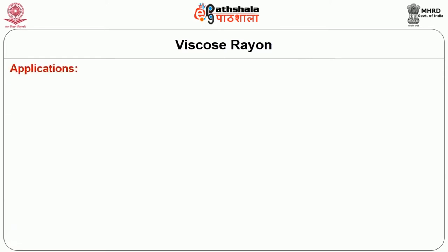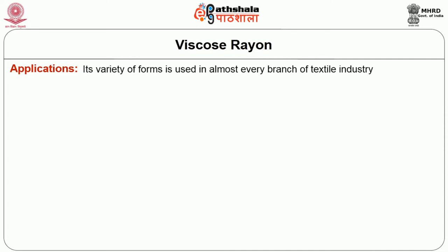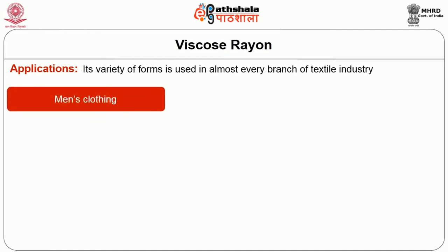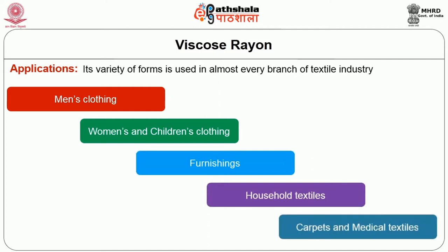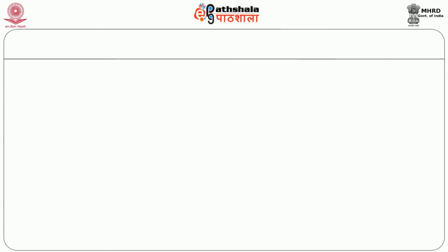It is not affected by most organic solvents used in dry cleaning processes. Some of the applications of Viscose Rayon: in its variety of forms it is used in almost every branch of the textile industry. It is used in men's wear, women's wear, children's wear, and clothing. It is used in furnishings, household textiles, carpet industries, and medical textiles.